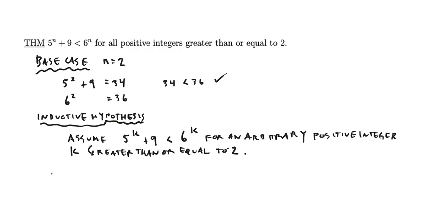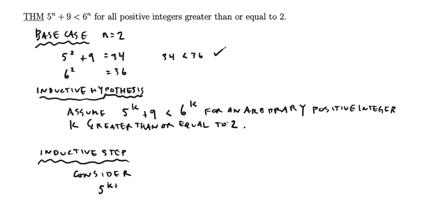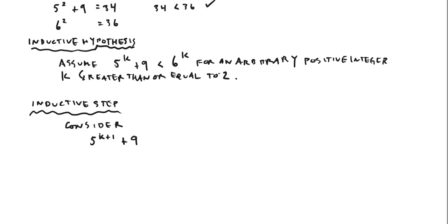My inductive step will start out as expected. I'm going to consider the quantity on the left-hand side in the k plus 1 case. So here I'm going to consider 5 to the k plus 1 plus 9. Looking at my inductive hypothesis, I know that I've got something to plug in essentially for 5 to the k, so let me start by rewriting this as 5 times 5 to the k plus 9.